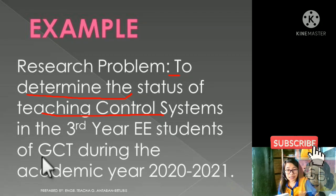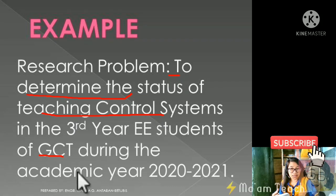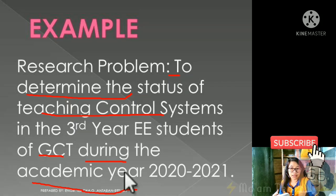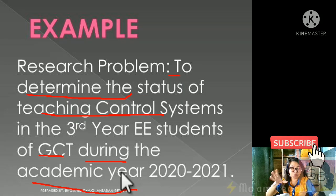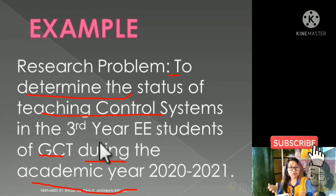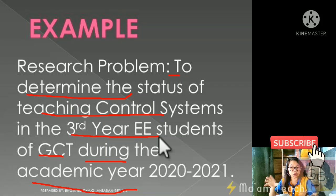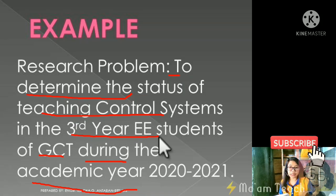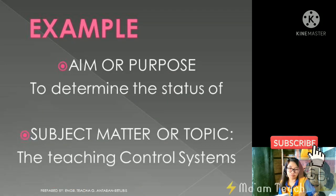For the question 'where,' the place is GCT — Garcia College of Technology. For 'when,' it is during the academic year 2020–2021. For the population — 'from whom' — since the problem is about teaching, the respondents could be the third year EE students, the instructor, or both.